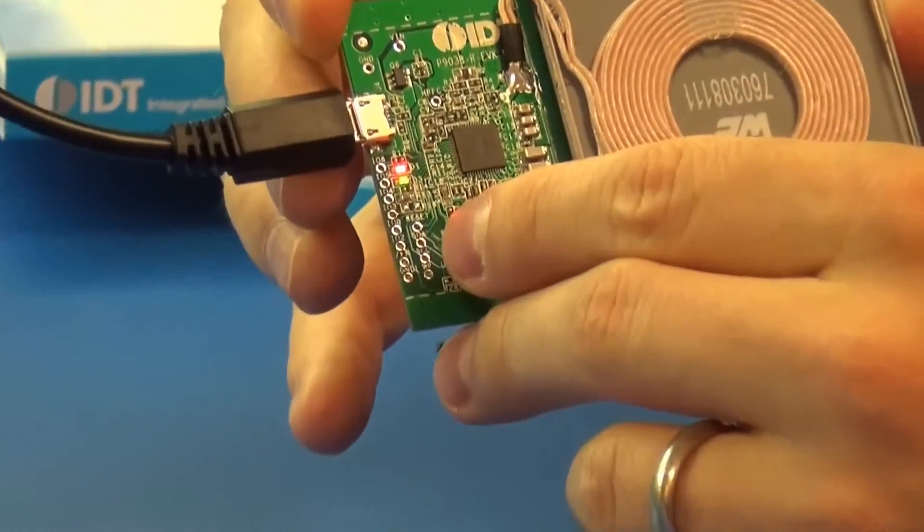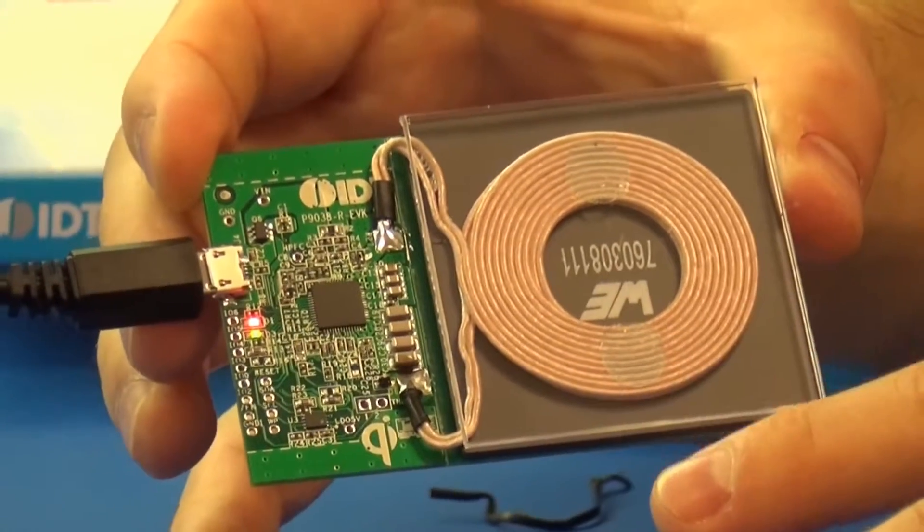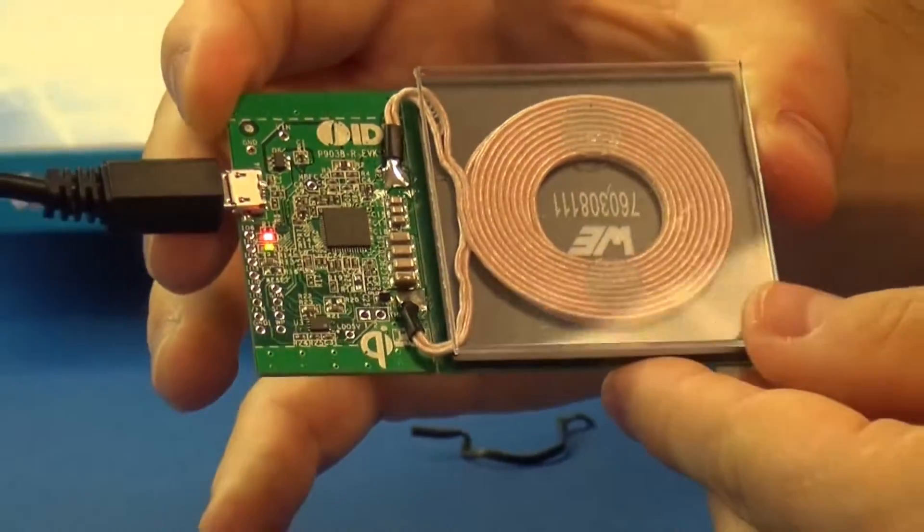The red and the green LEDs will turn on. That means it's in standby mode waiting for a receiver to be placed on it.